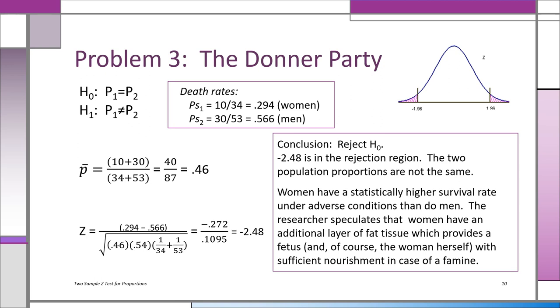So we're comparing—this is a Z—we're comparing 0.294 minus 0.566, so in the numerator we have minus 0.272. And in the denominator you have the square root of 0.46 times 0.54, then in parentheses—which remember you got to do that first—1 over 34 plus 1 over 53. After you do the thing in the parentheses, multiply that by 0.54 times 0.46, take the square root, and you end up with 0.1095 in the denominator. You end up with a z value of minus 2.48.